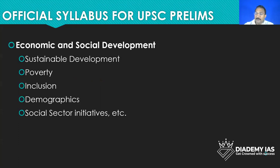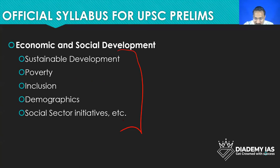If you see the official syllabus, it is very simple — it has given only these five lines: sustainable development, poverty, inclusion, demographic. So this is not sufficient to really decipher what is the syllabus of the UPSC.